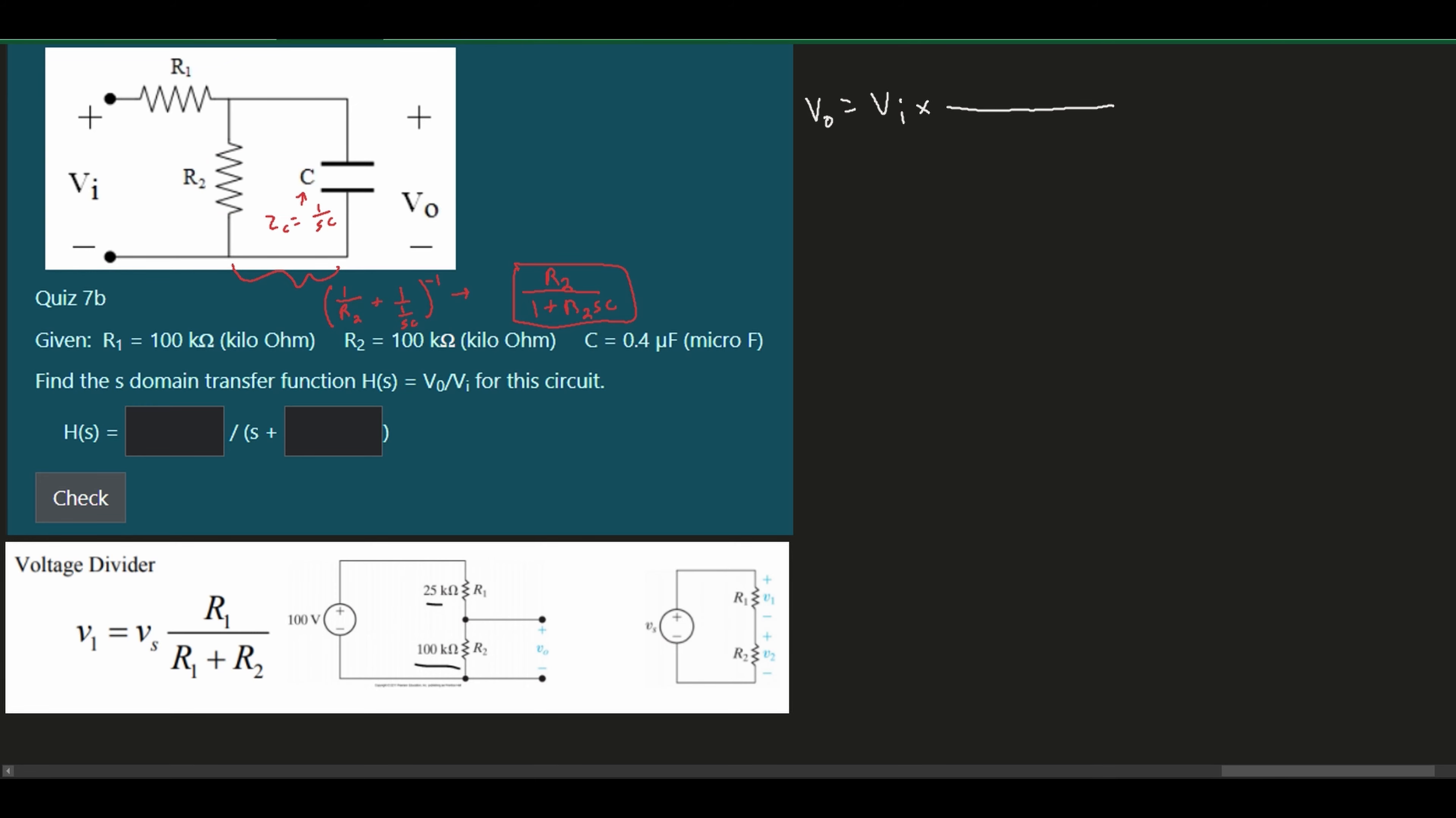So we are just simply going to have R2 divided by 1 plus R2 SC. And then we need to have our R1 plus R2. So we're going to have R2 over 1 plus R2 SC plus, and then we're just going to have our R1 here. From this, what we can do is we can take all of this, and we're going to multiply it by 1 plus R2 SC. We're also going to move our Vi to the other side.